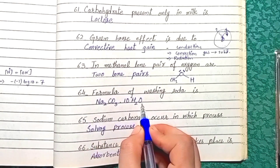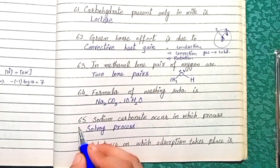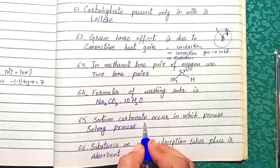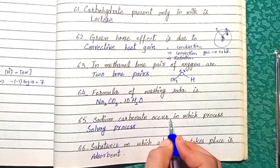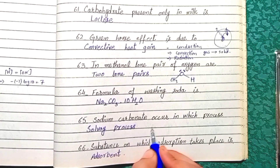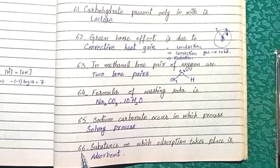Question 65: Sodium carbonate is produced in the Solvay process.